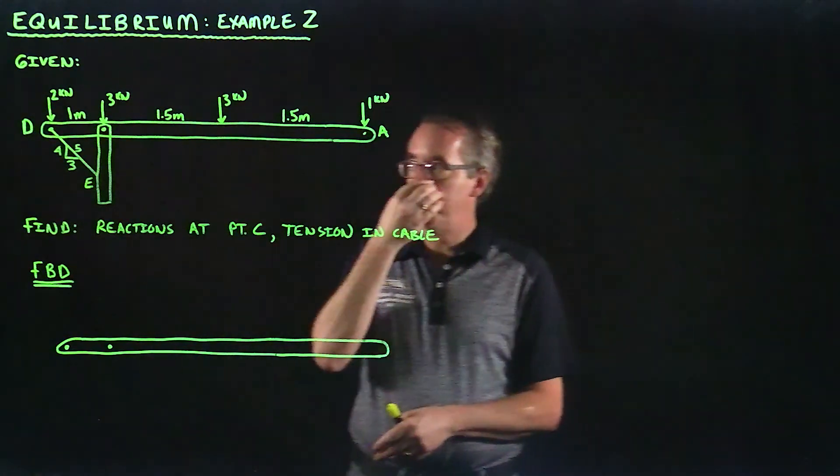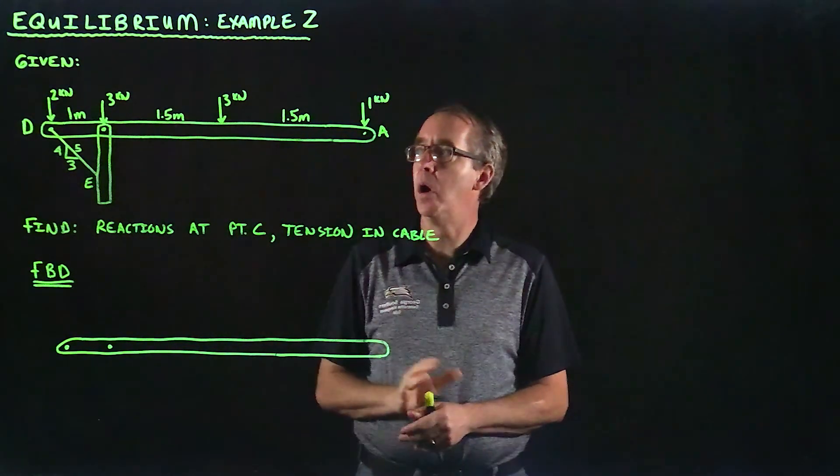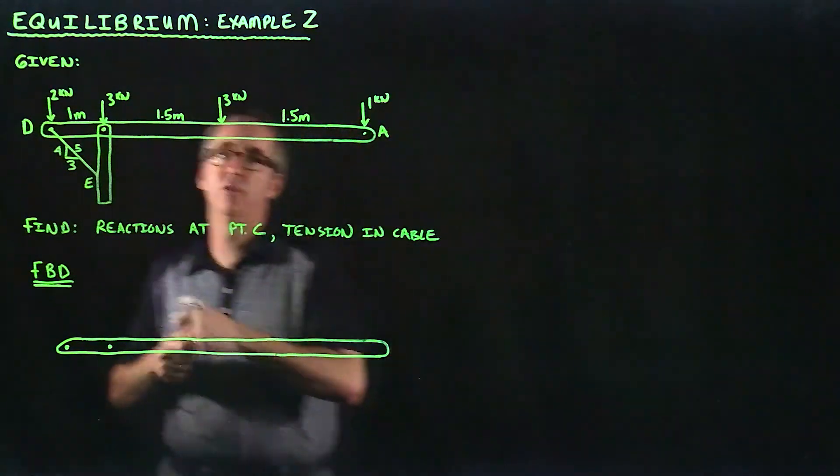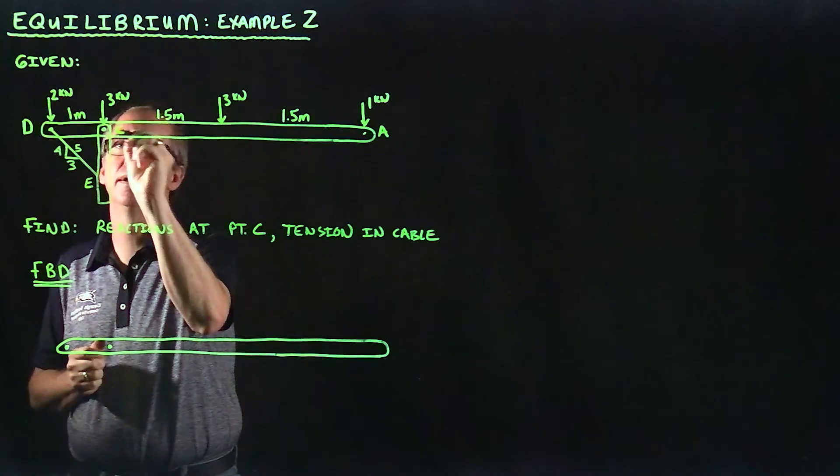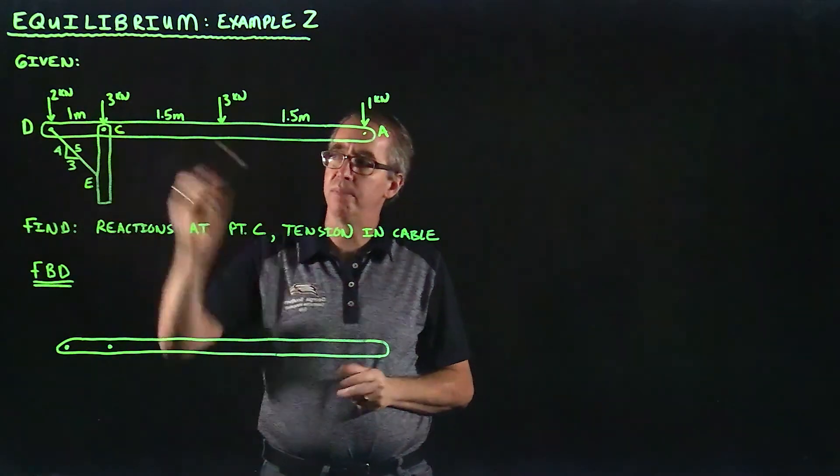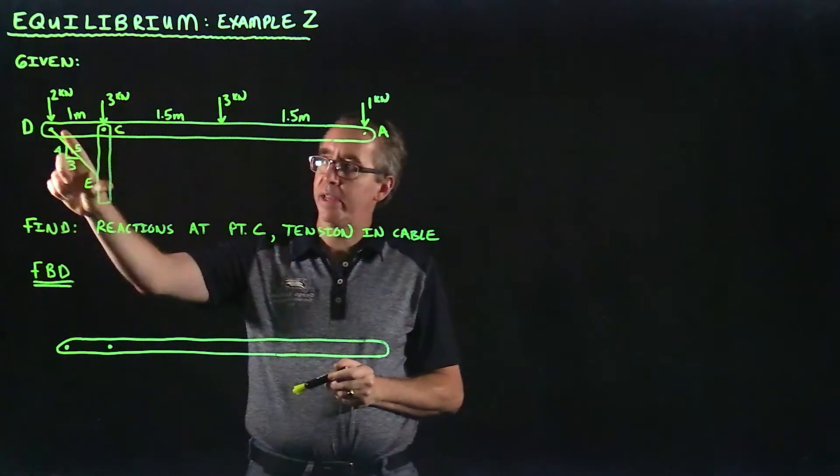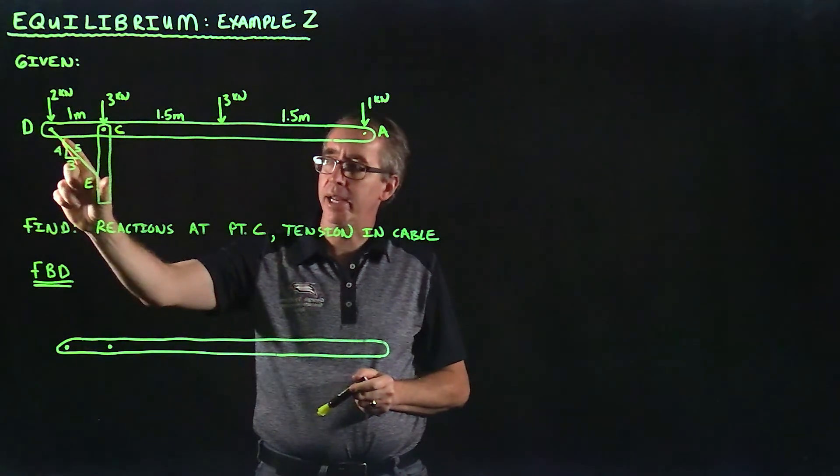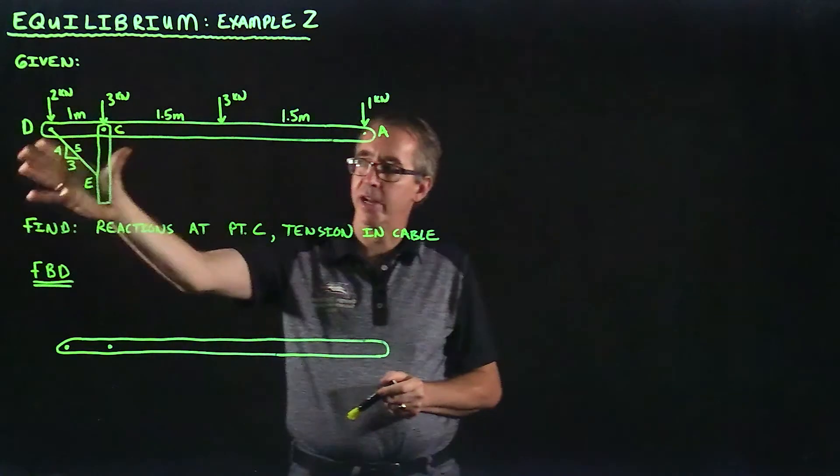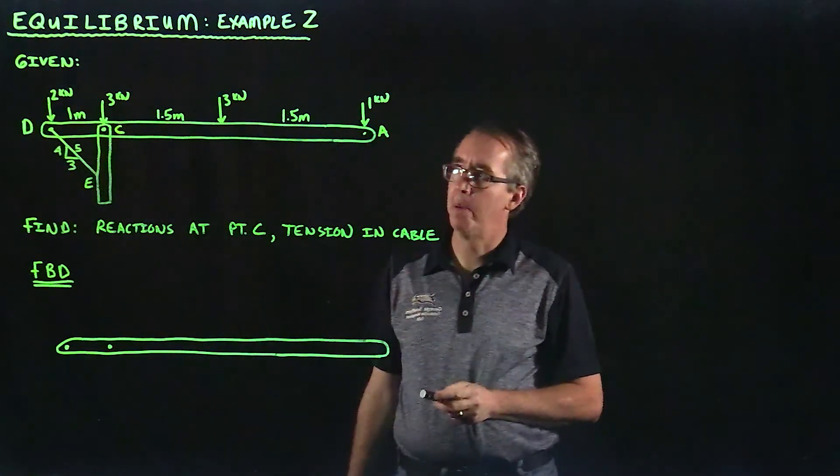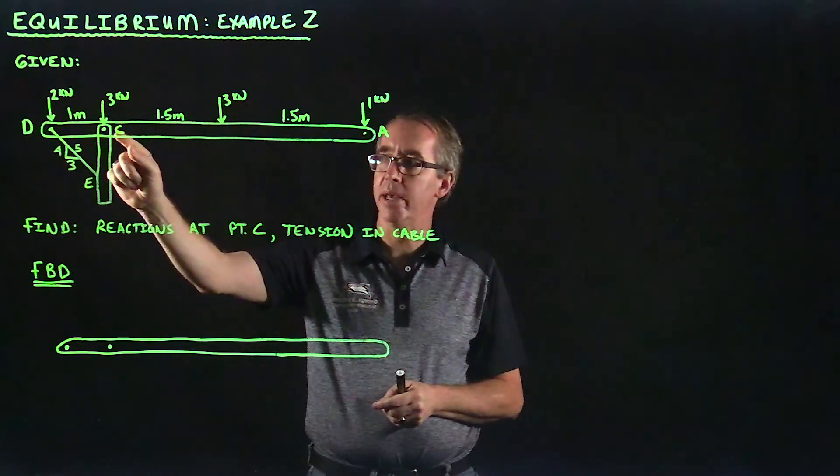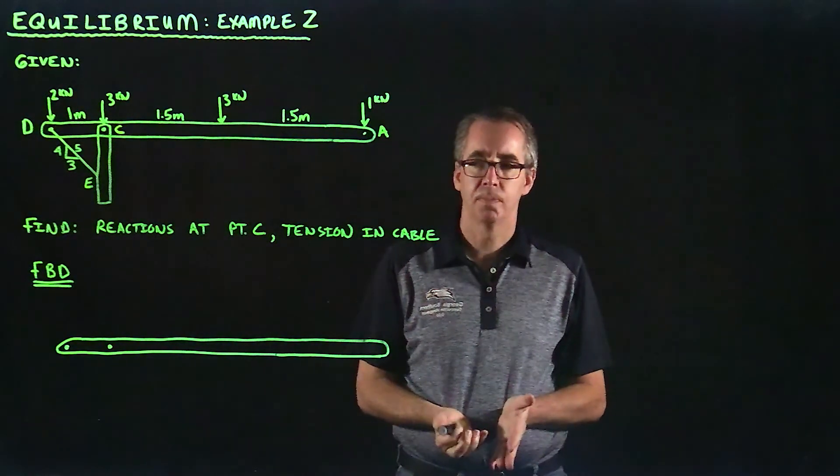I've got a beam that's a total of four meters long, and it's got a vertical support here and a pin at point C. We have a cable that's connected at point D and E, and that cable is at a slope of three to four, or four to three, depending on your perspective. What we're going to do in this example is solve for the reactions at that pin, and we're also going to solve for the tension in the cable.